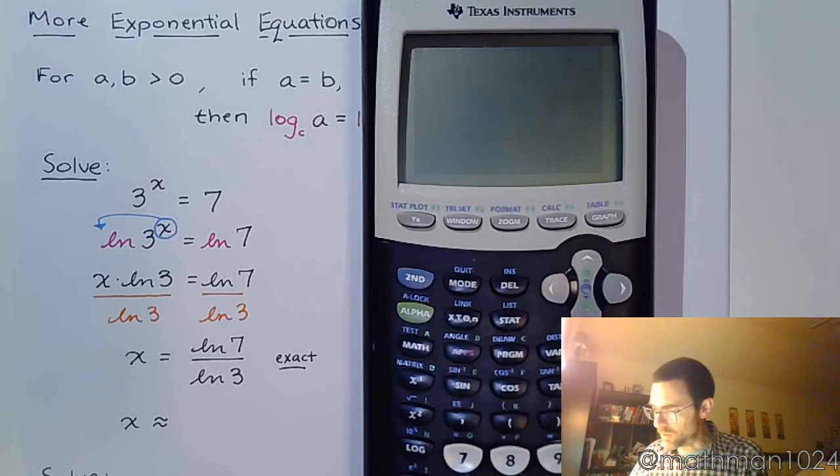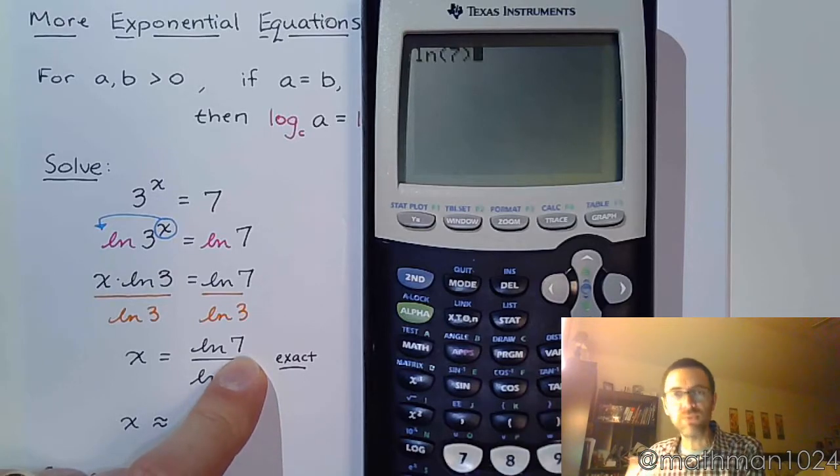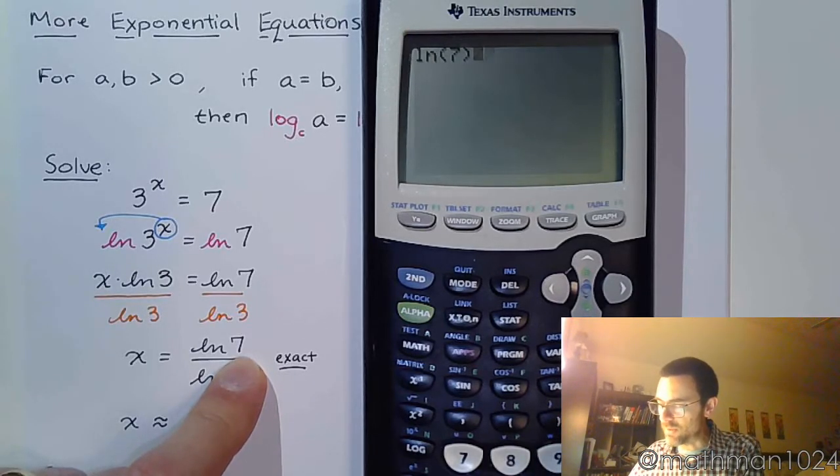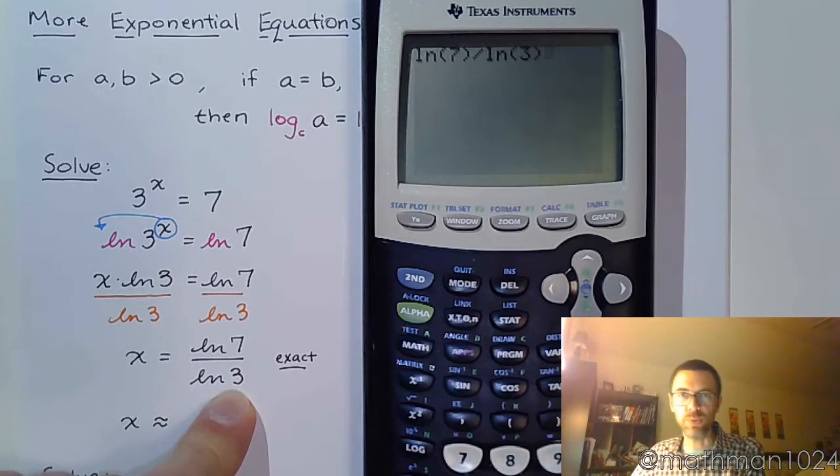All right, so here we're going to do the natural log of 7. Make sure that you remember to close up the parentheses for that natural log, and then divide by the natural log of 3 and close up those parentheses.